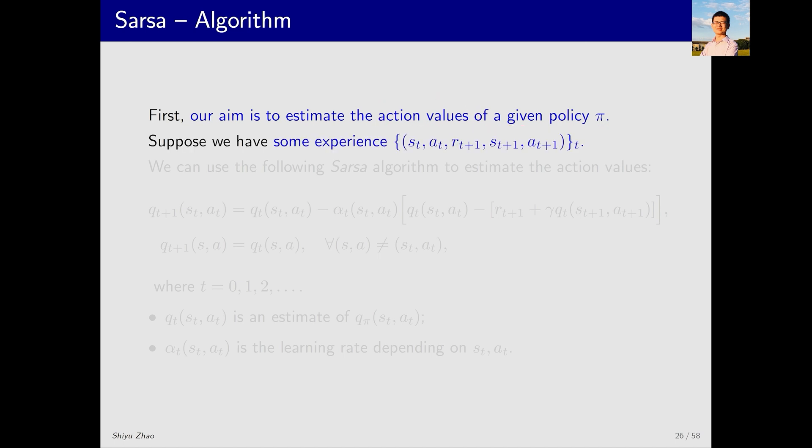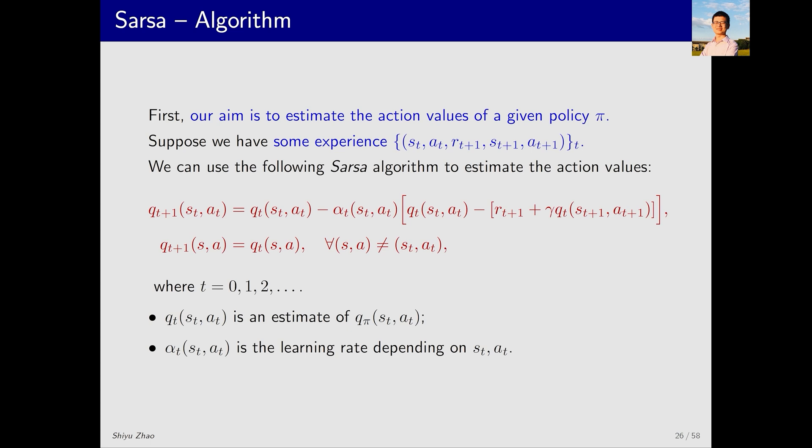Without a model, we need experience data. Suppose we have this experience, which is a set of data points at different time steps t. Each data point consists of S_T, A_T, R_{t+1}, S_{t+1}, and A_{t+1}. With this experience, how do we proceed?